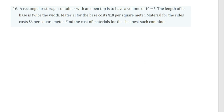Here's one more question for an optimization problem. This one is going to include cost of material. A rectangular storage container with an open top is said to have a volume of 10 meters cubed. The length of its base is twice the width. Material for the base costs $10 per square meter, material for the sides costs $6 per square meter. Find the cost of materials for the cheapest such container.